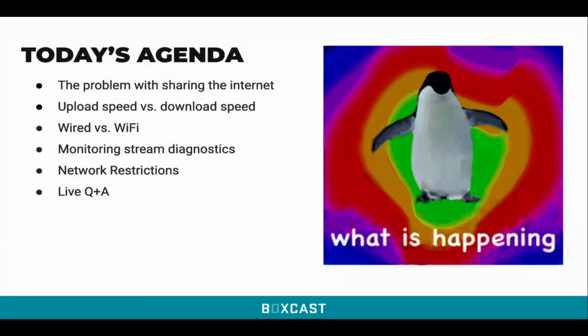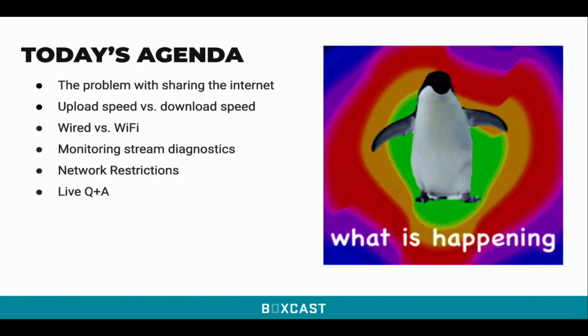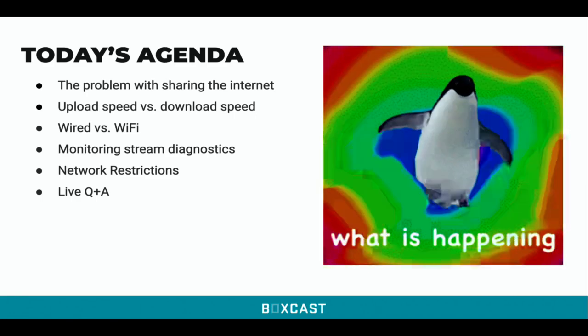Today we're going to start by talking about the problem with sharing the internet — Gary has a great analogy. We'll dive into upload speed versus download speed, and wired versus Wi-Fi. If you don't take away anything else today: no matter what, Ethernet is probably always going to be better than Wi-Fi — we literally bought these shirts so that would sink in. We'll also show you how to monitor stream diagnostics in the BoxCast dashboard and talk about network restrictions, finishing with a live Q&A.